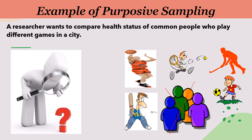For example, researcher wants to compare health status of people who play basketball and football. So, researcher will reject all the other members who do not play basketball and football. The first question researcher will ask some members while selecting the sample is: do you play football or basketball? If he gets the answer yes, then the next question will be: how many hours in a week do you play? On the basis of this information, researcher will judge whether he wants to handpick that member or not for the sample.